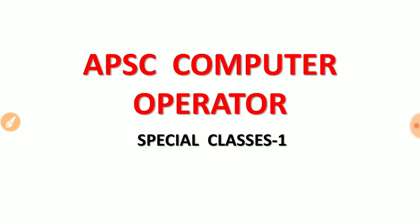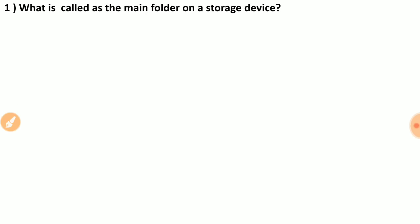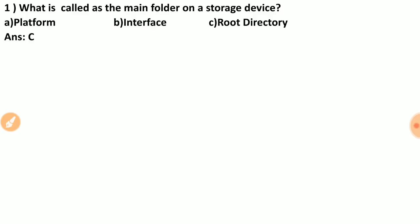Question number one: what is called the main folder on a storage device? Options are: DSA, platform interface, root directory. The correct answer is C — root directory. The main folder on a storage device is called the root directory.